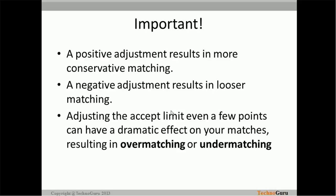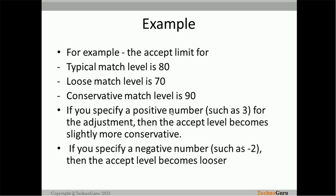To determine the appropriate value, run the match job while adjusting this value a couple of times. If you change this value slightly from lower to higher or higher to lower, you may encounter over-matching or under-matching. An example: the accept limit for a typical match level is 80, for loose it is 70, and for conservative it is 90. If you specify a positive adjustment of 3, the accept limit becomes more conservative — fewer matches. If negative, matching becomes looser and more matches are found.